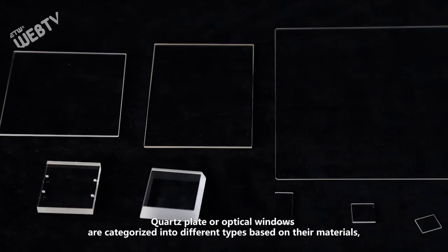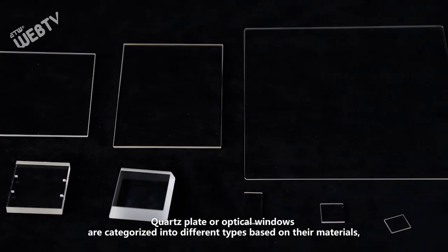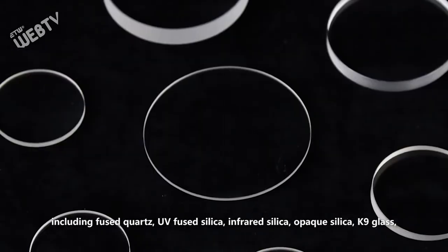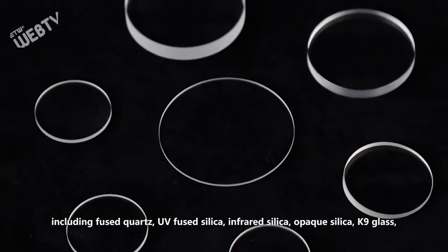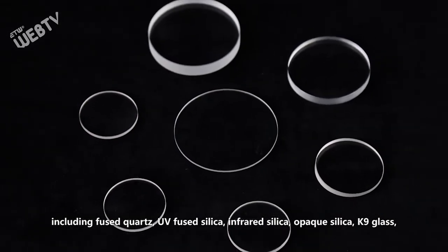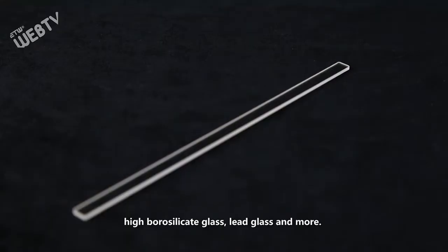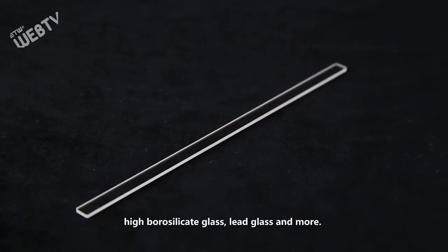Quartz plate or optical windows are categorized into different types based on materials, including fused quartz, UV fused silica, infrared silica, opaque silica, canine glass, high borosilicate glass, light glass, and more.